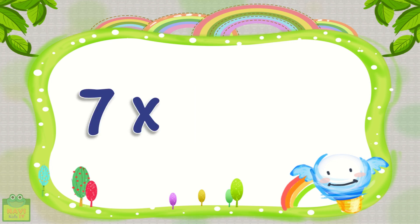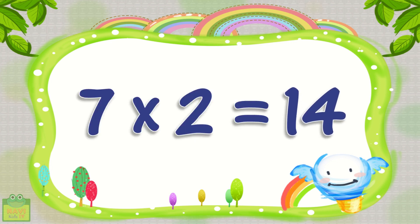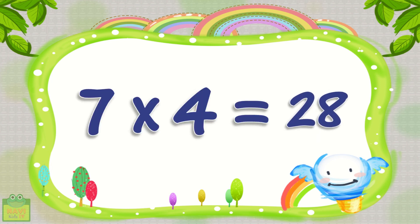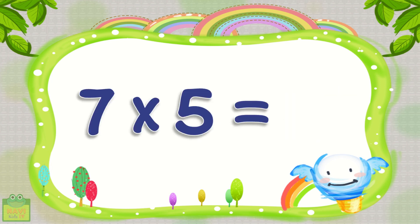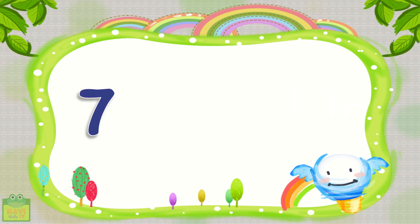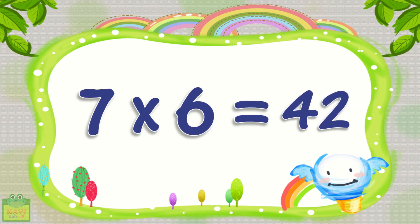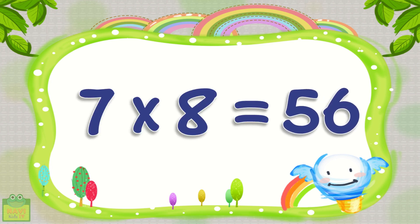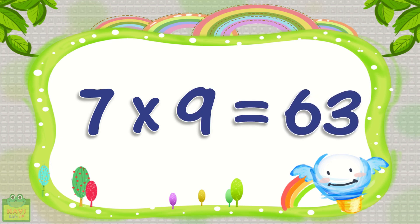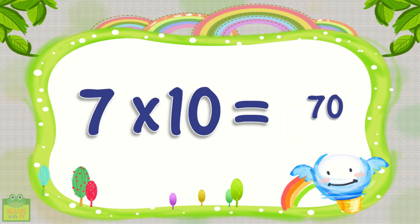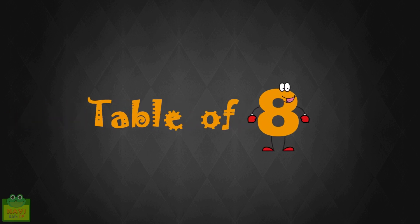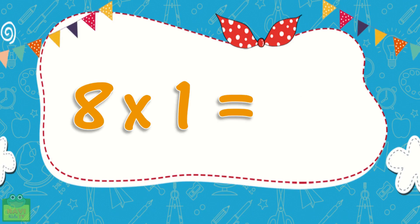7×2=14, 7×3=21, 7×4=28, 7×5=35, 7×6=42, 7×7=49, 7×8=56, 7×9=63, 7×10=70. Table of 8: 8×1=8.